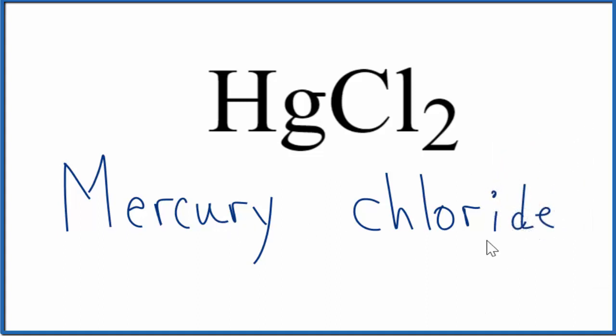That gives us mercury chloride as the name for HgCl2. But mercury is a transition metal, and it can have different charges based on what it's bonded to. Here it's bonded to chlorine. Chlorine is always going to be a one minus.